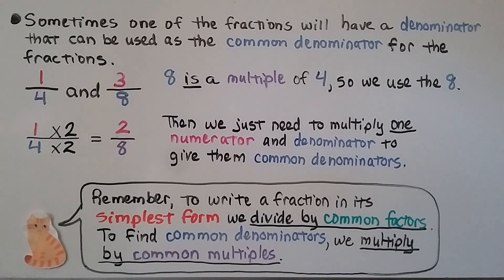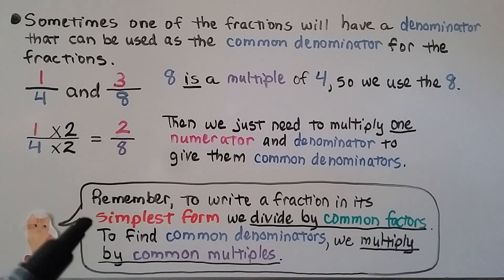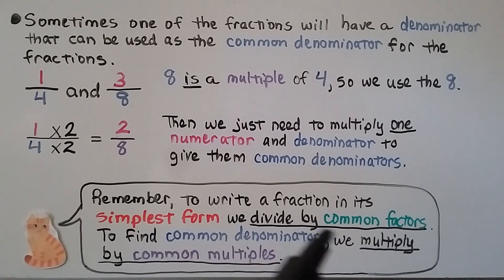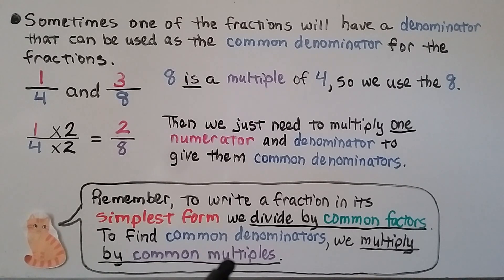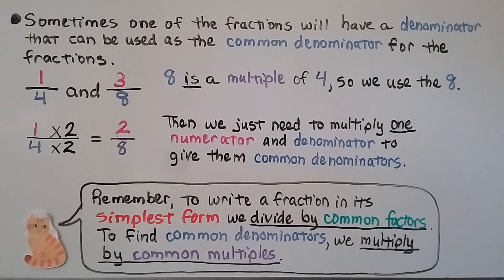Remember: to write a fraction in its simplest form, we divide by common factors. To find common denominators, we multiply by common multiples. We learned how to write fractions in simplest form in video 6.3, which is linked in the description — it's very important to know how to put fractions in their simplest form.